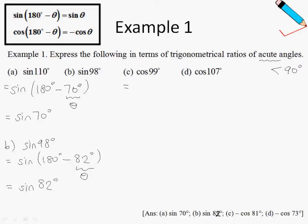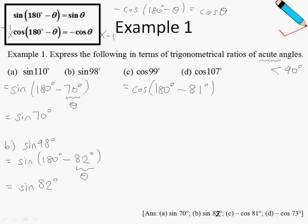Before we apply the second formula, note that it can be written another way. If we multiply both sides by negative 1, we get: negative cosine of (180 degrees minus theta) equals positive cosine theta. Now, 99 degrees equals 180 degrees minus 81 degrees, so using the cosine formula, this becomes negative cosine 81 degrees.